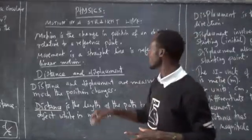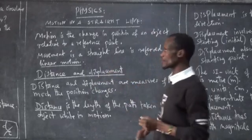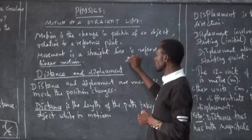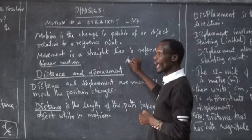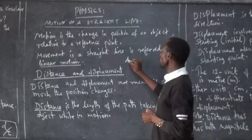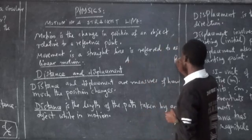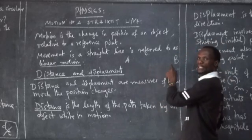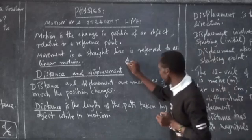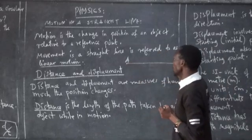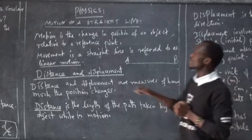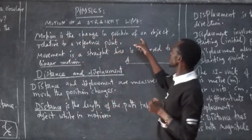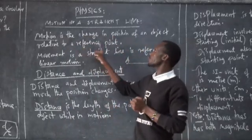What is motion? Motion is whenever you change your position. For example, you were at point A and you are moving from point A to point B. From point A to point B means you have changed position — you have done something called motion. Motion is the change in the position of an object relative to a reference point.